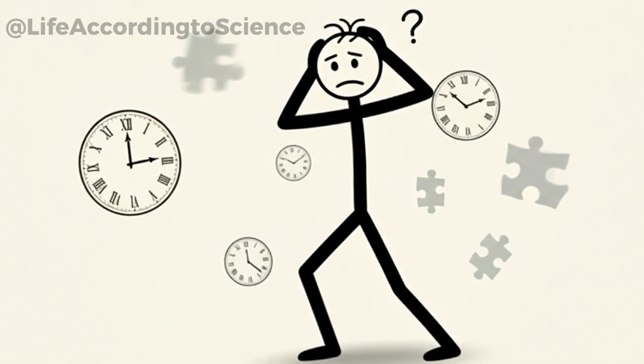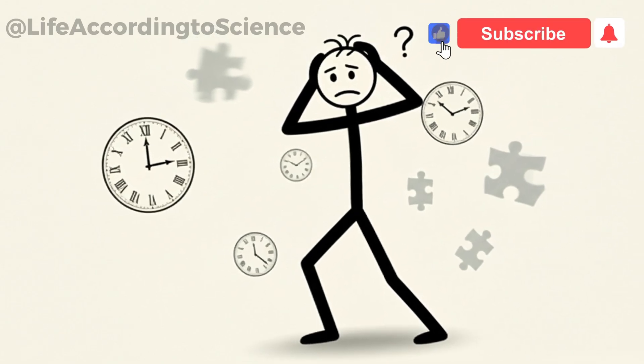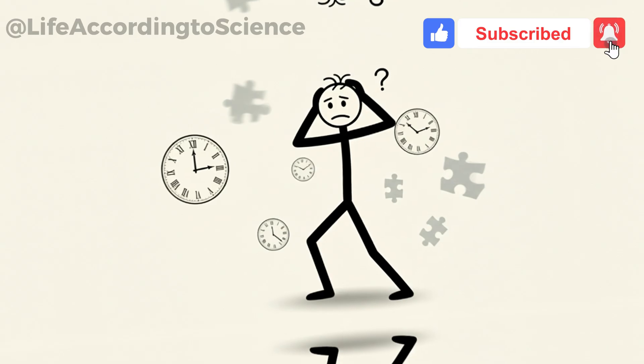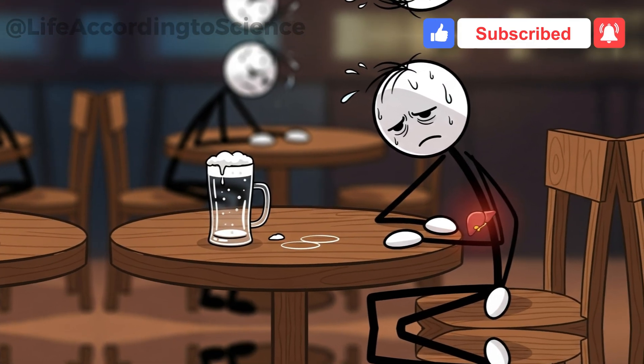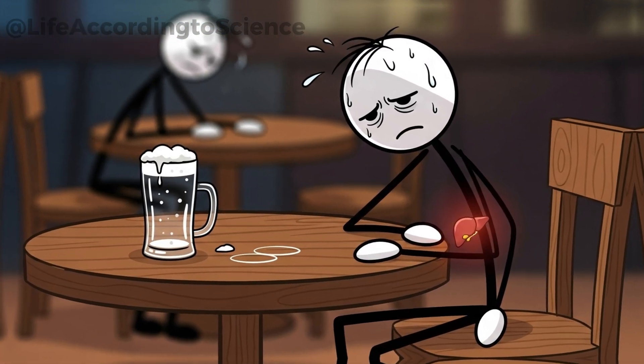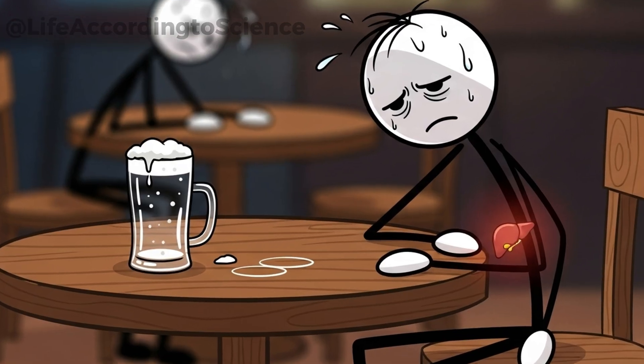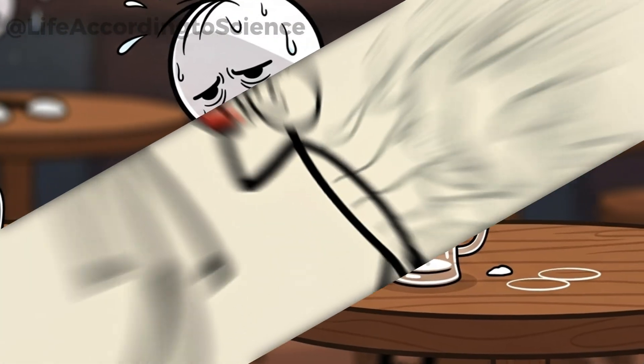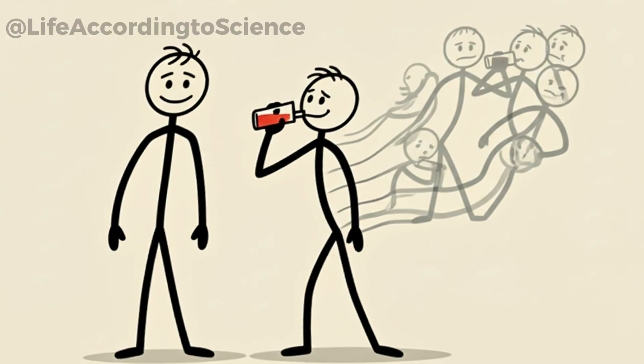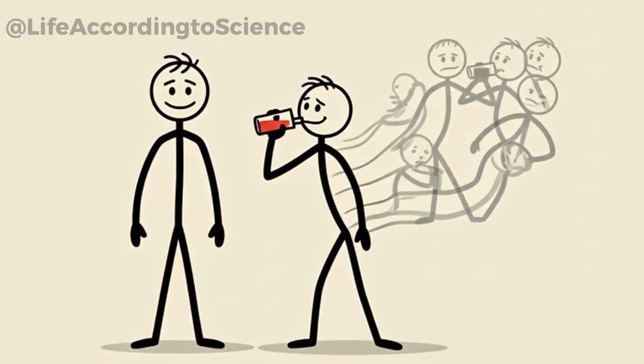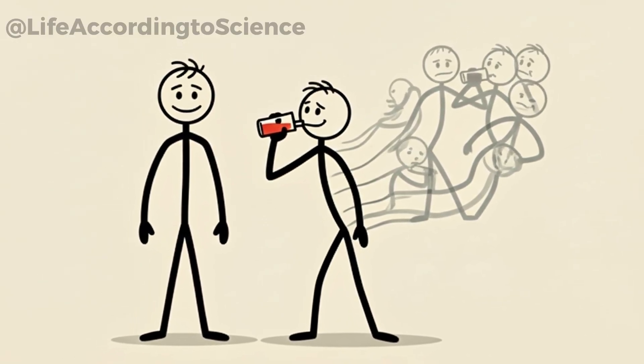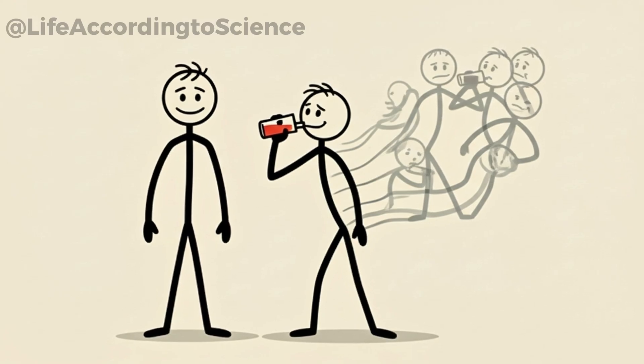Even one beer can subtly affect coordination and concentration more than people realize. By the end of the first few hours, your body has worked overtime to process what seems like a small pleasure. For the casual drinker, this cycle ends here. But for someone repeating it every single day, the body never fully resets.